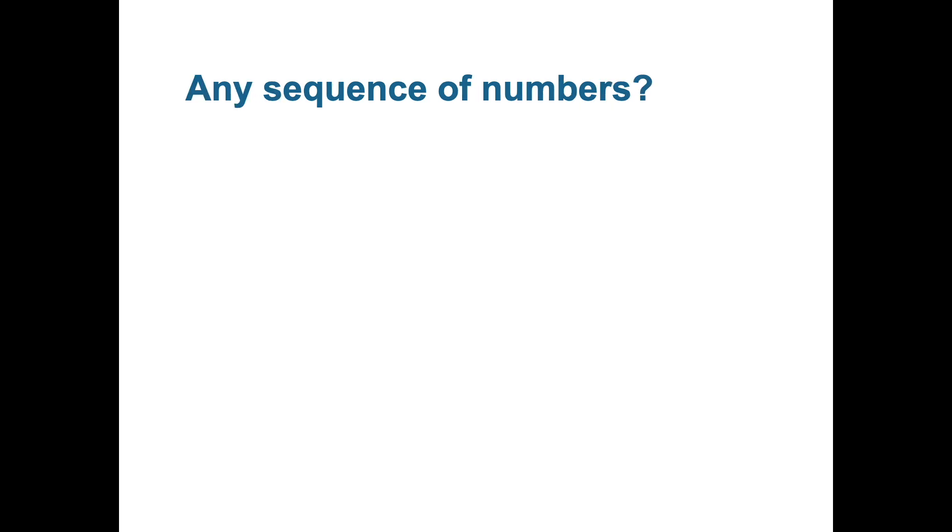Firstly, do these rules in number pyramids work for any sequence of numbers? For instance, 9, 13 and 17 on the bottom row is a sequence where it's going up by four each time.